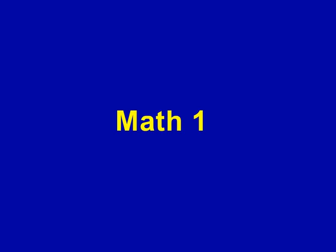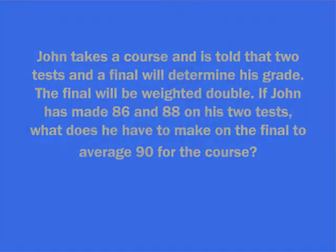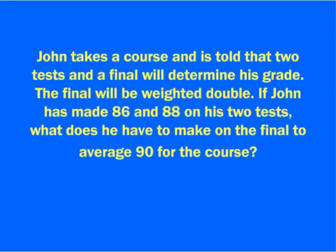Now we'll move on to math. First we'll take a look at averages. They're quite likely to give you a problem like this, where it says John takes a course and is told that two tests and the final will determine his grade. The final will be weighted double. If he's made an 88 and 86 on his first two tests, what does he have to make on the final to average 90 for the course?